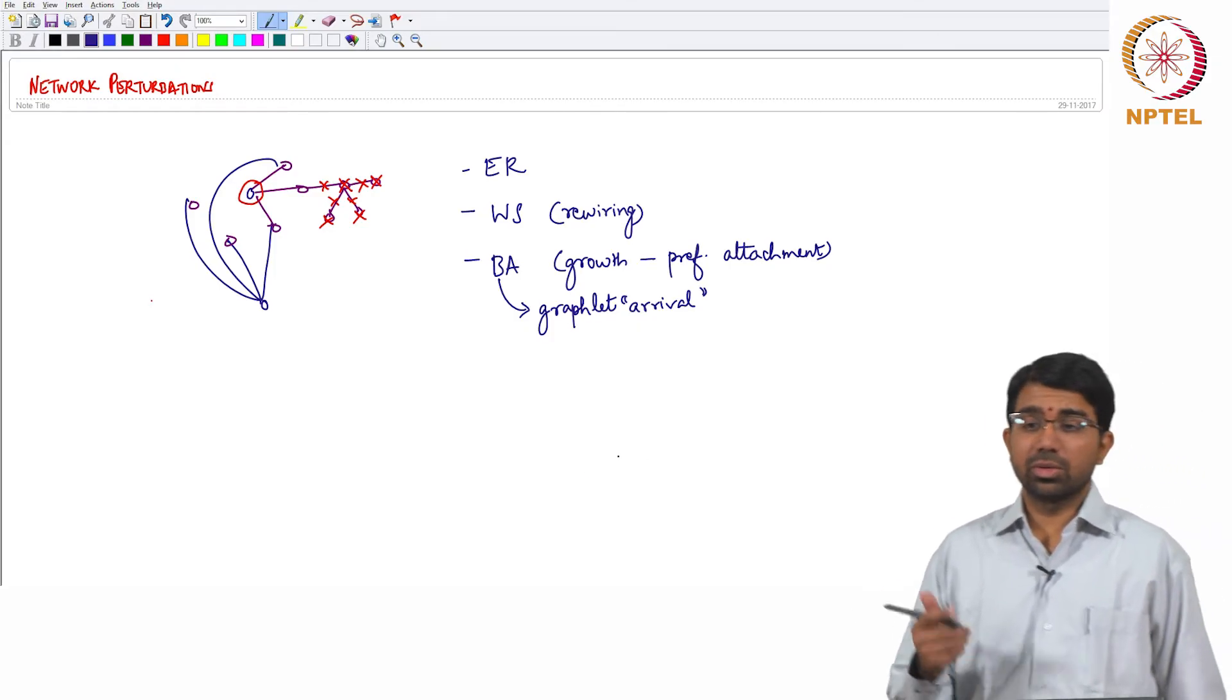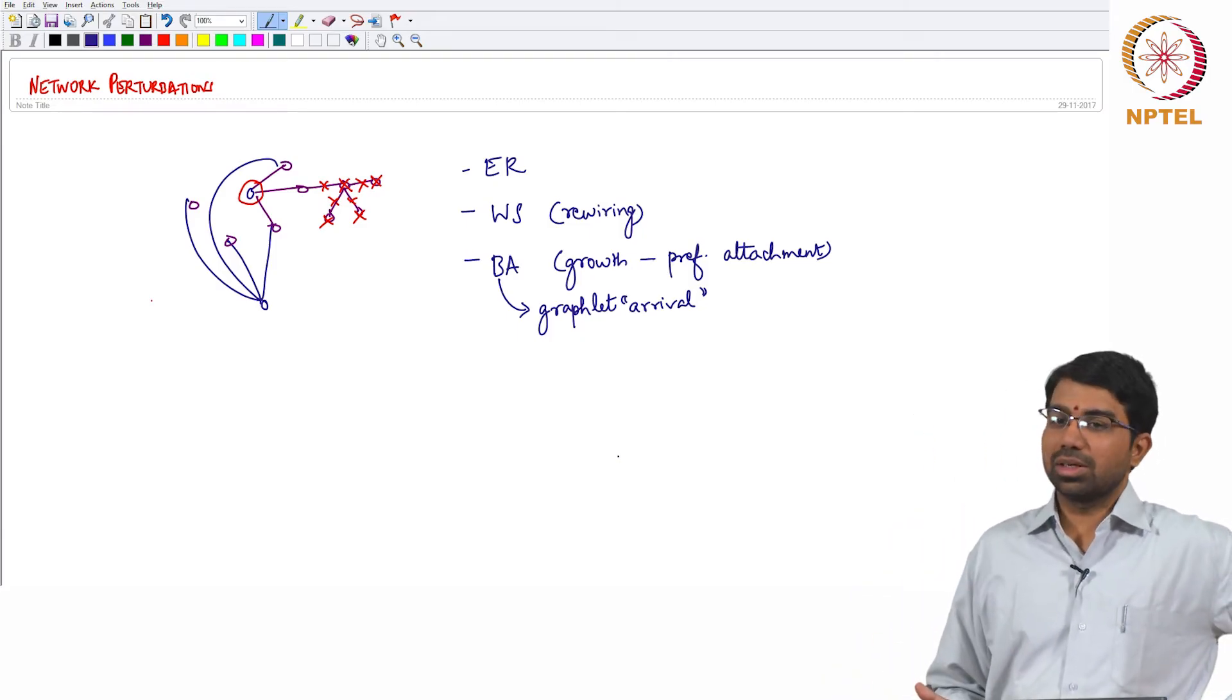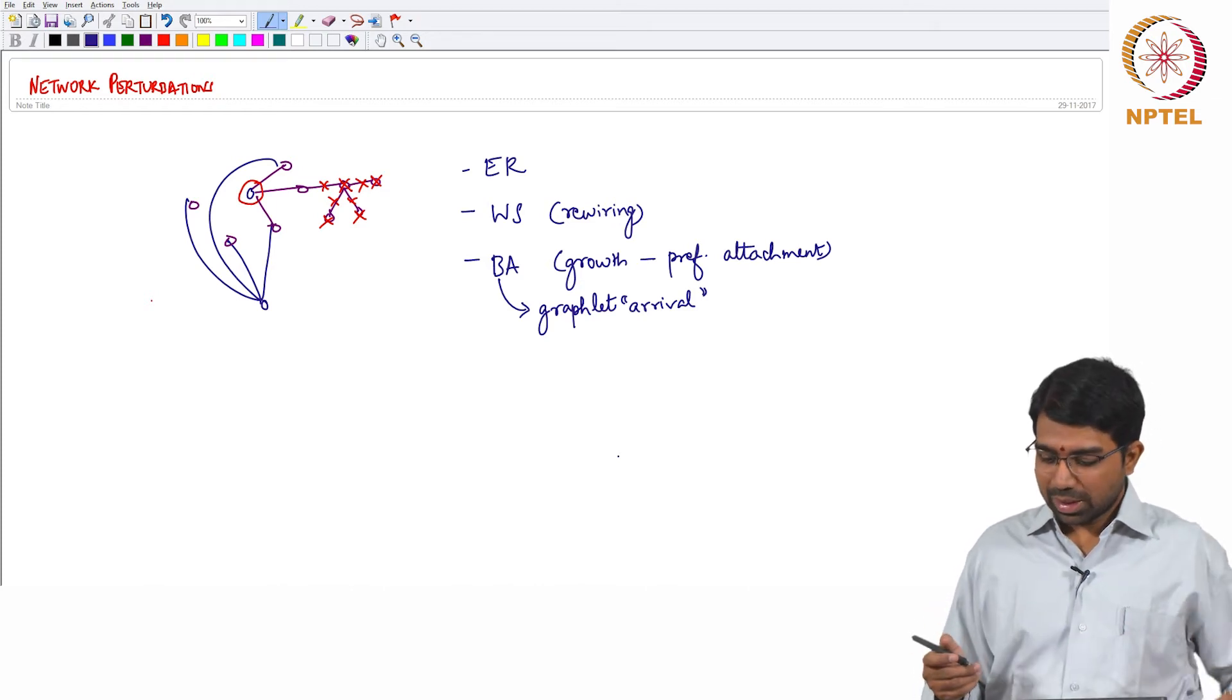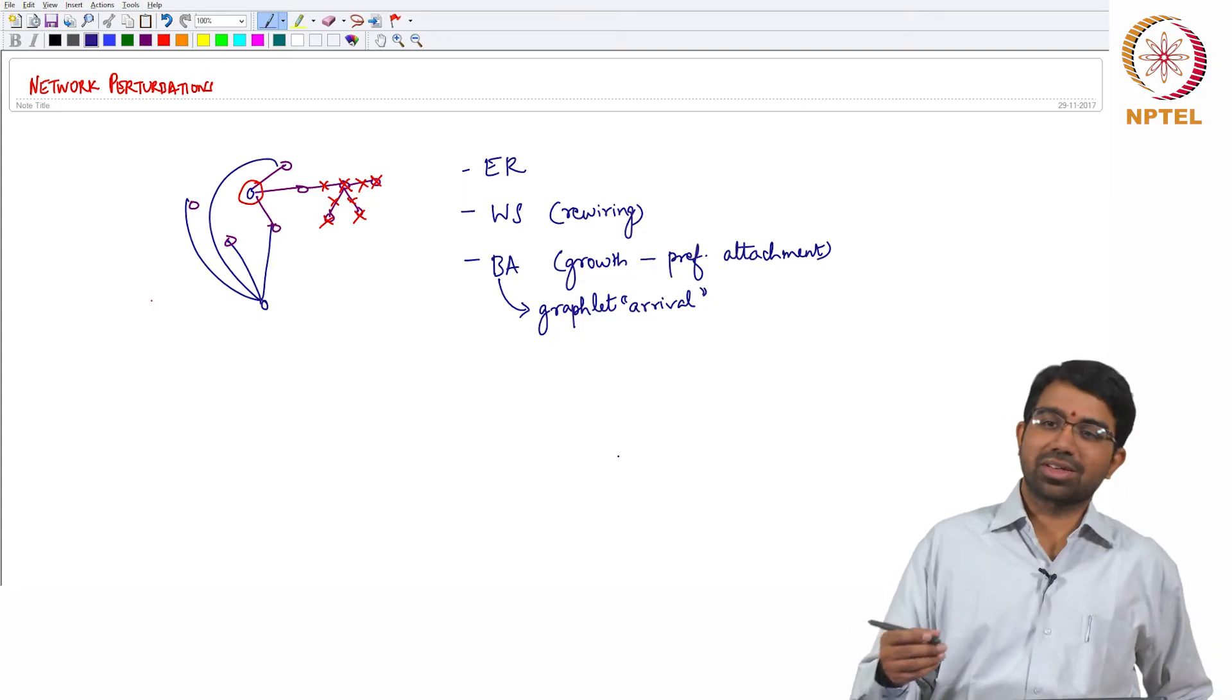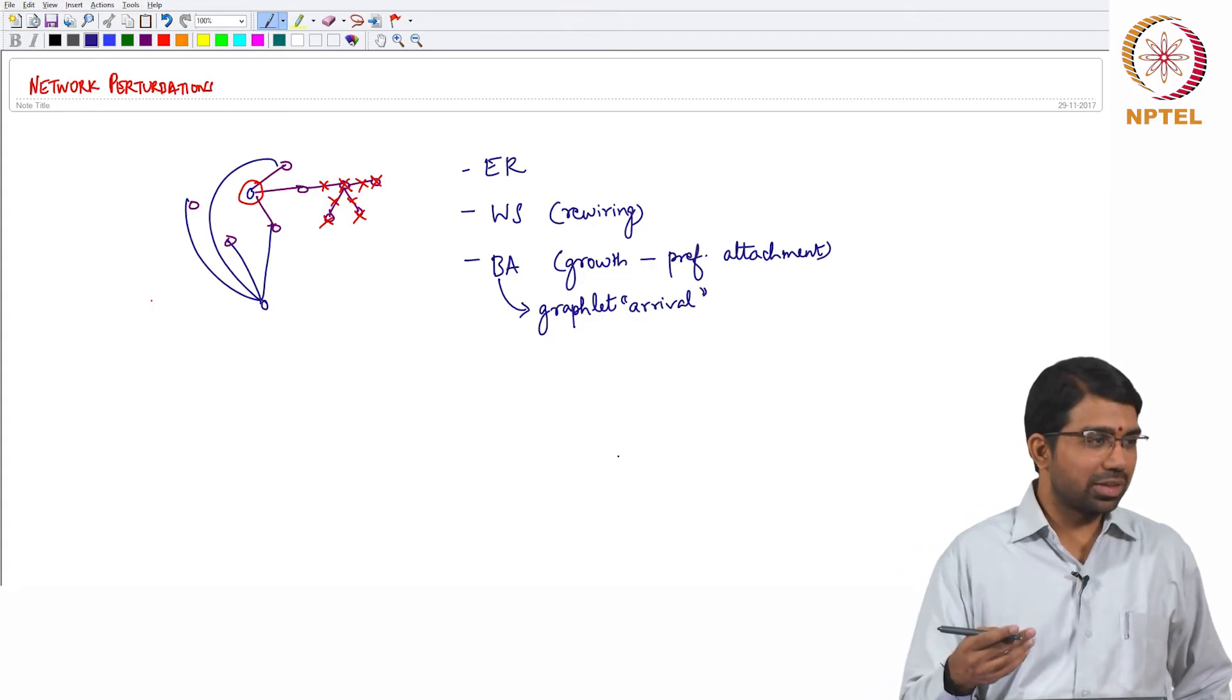Typically when you look at social networks that becomes very important, not so much in biological networks except if you have community networks. Obviously social networks are also of interest in biology if you want to study the transmission of a disease and so on.